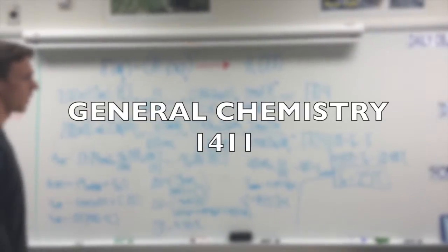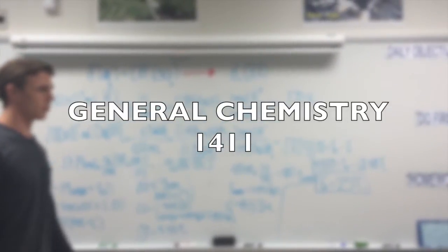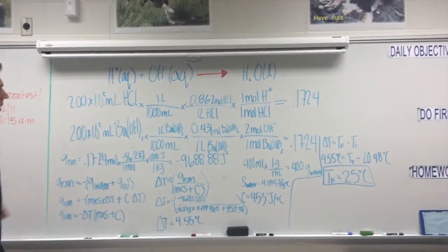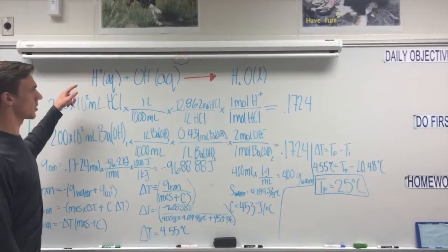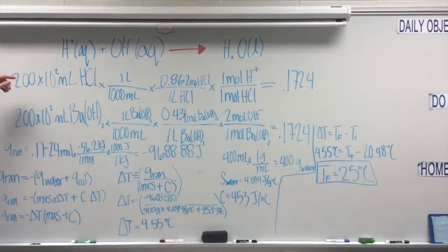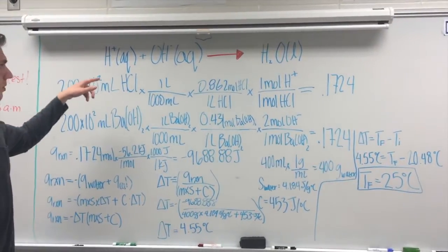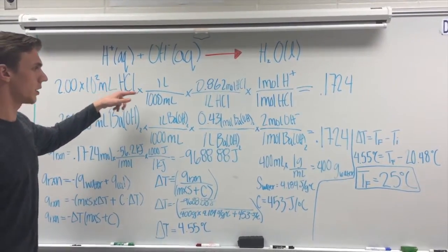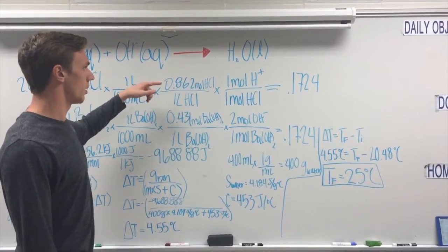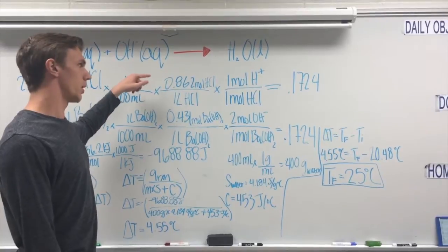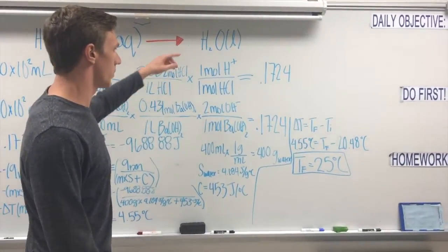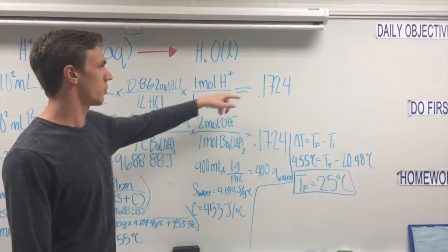For this problem, we're trying to find the final temperature of a reaction between HCl and Ba(OH)₂. We first start with the neutralization reaction of H⁺ and OH⁻ to water. We're given 200 milliliters of HCl, convert that to liters, and then by using the molarity of HCl, which is 0.862 moles per liter, we can find the moles of HCl. Then by using the mole ratio, we can find the moles of H⁺, which is 0.1724.